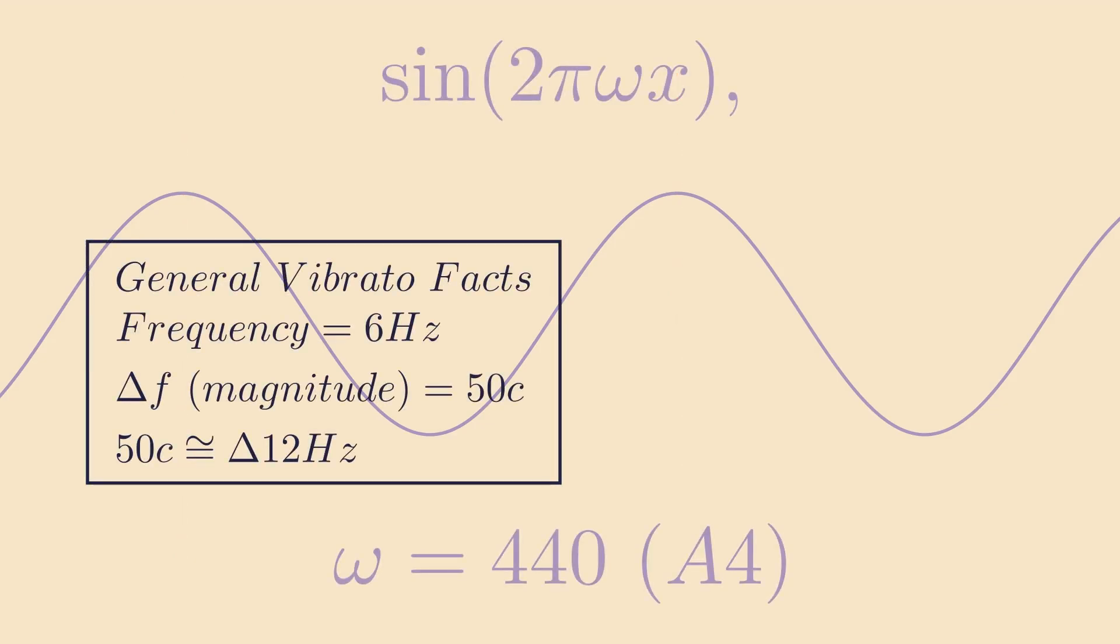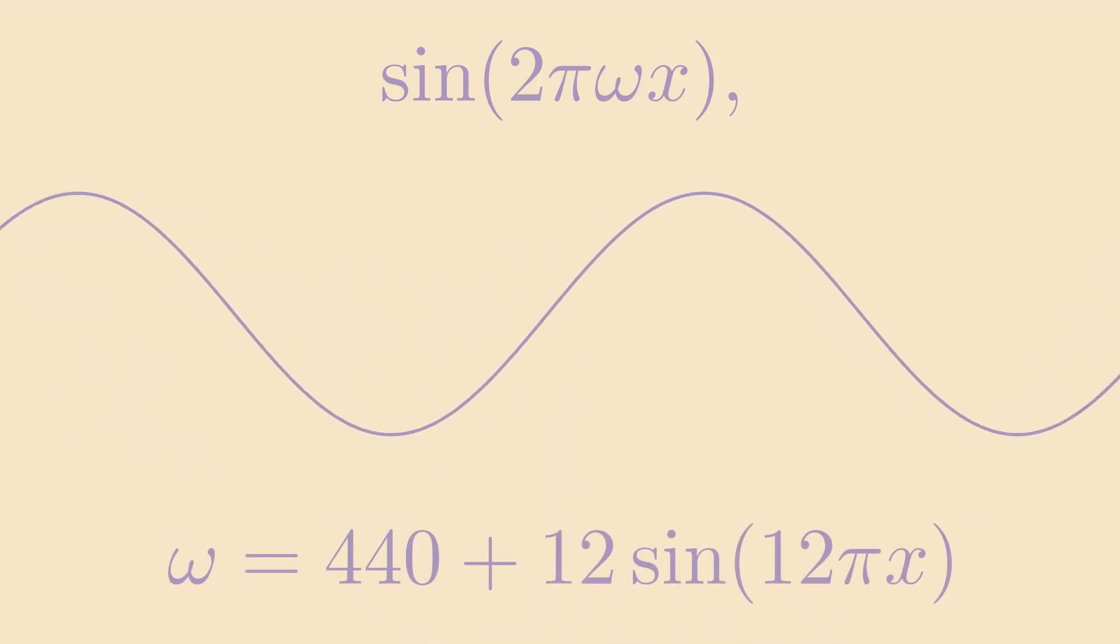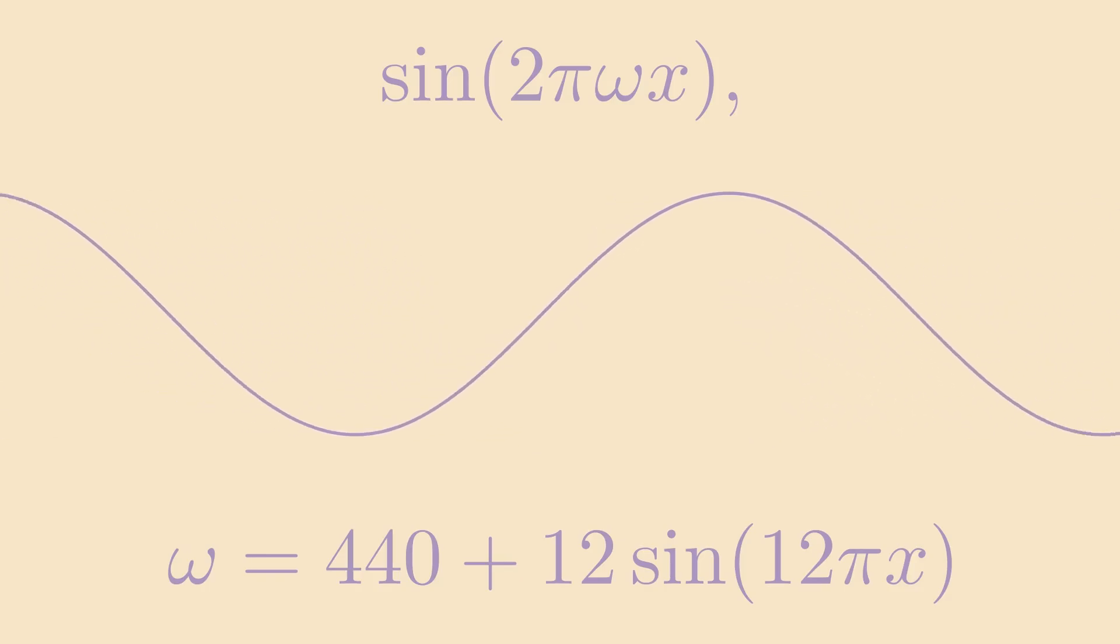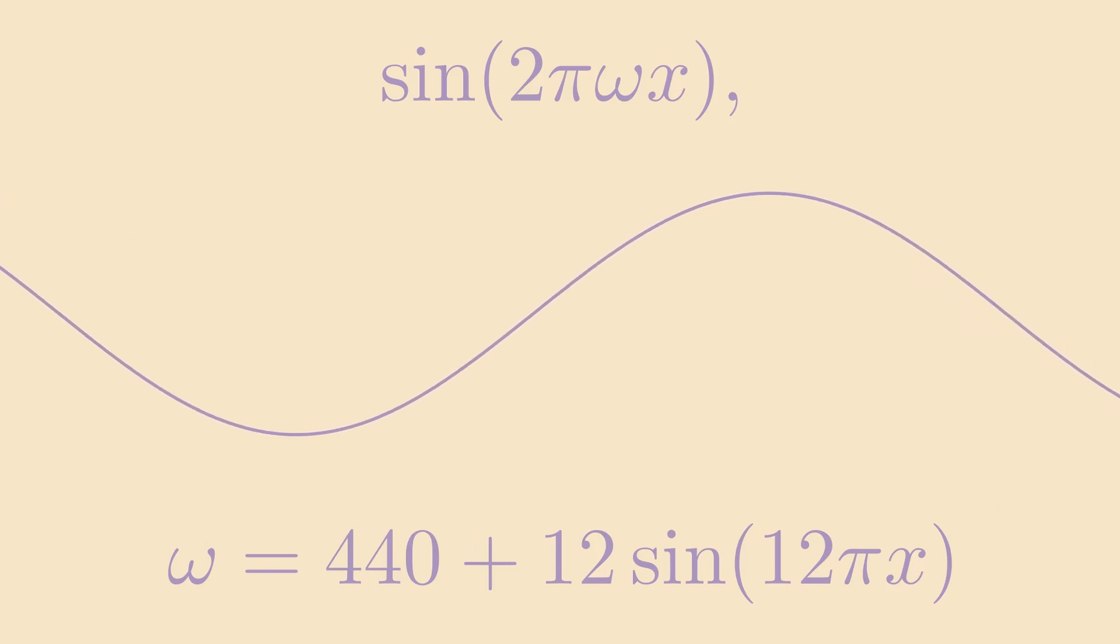we'll write frequency as such. This means that every 1 over 12 seconds, our frequency will increase from 440 Hz to 452, then after another 1 over 12 seconds, our frequency will decrease down to 428.